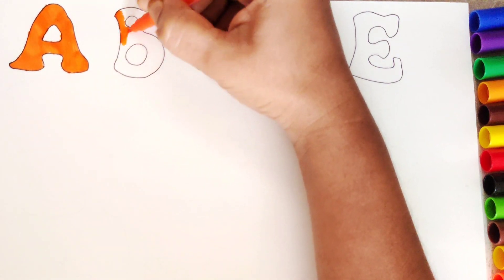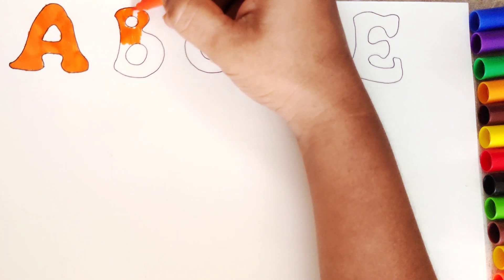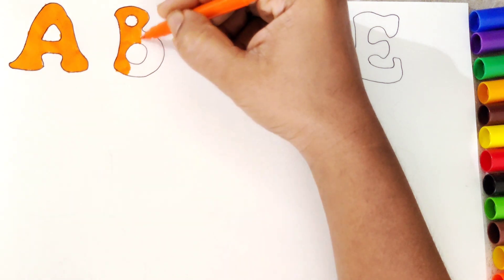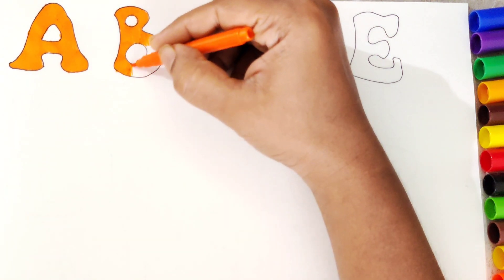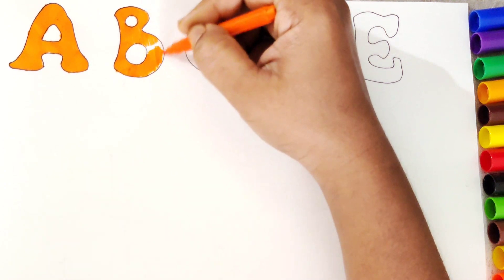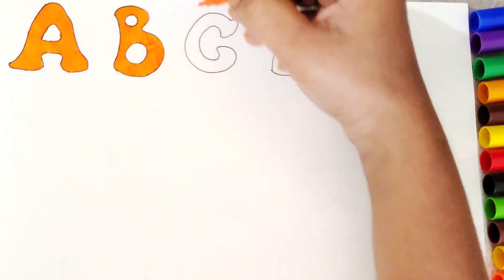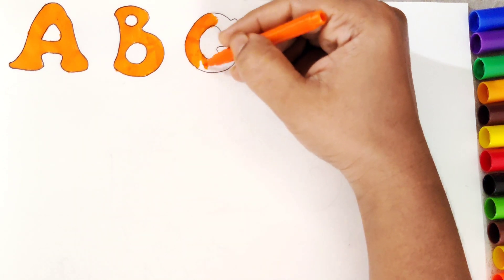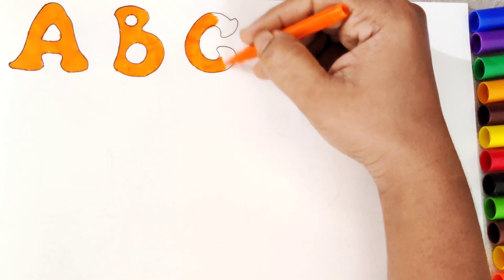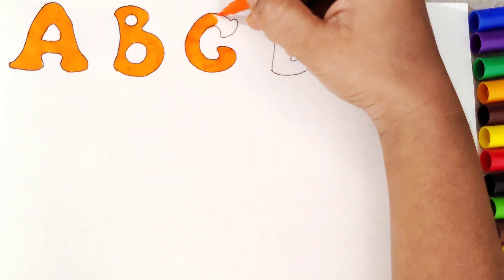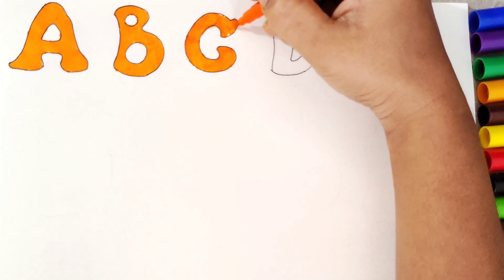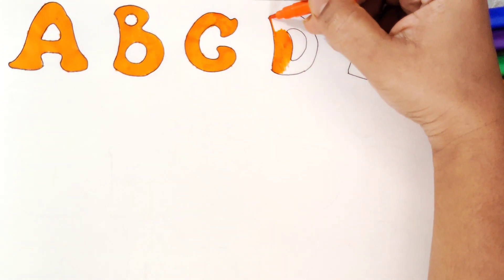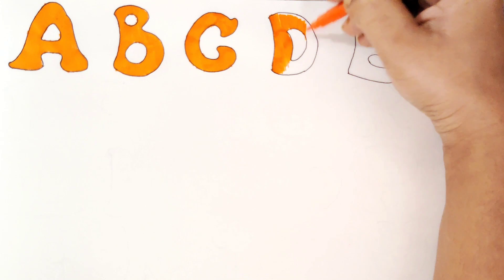Wow, orange color in alphabet A is looking amazing. Let's fill B also in orange color. Now let's start C. C for cat.